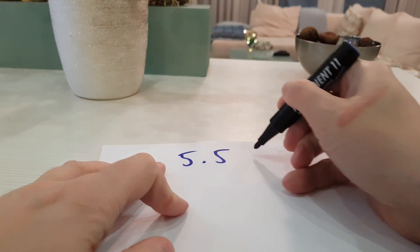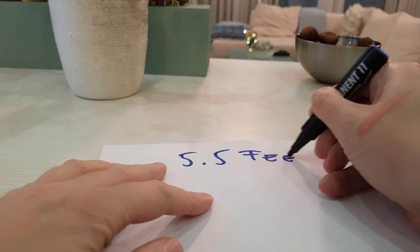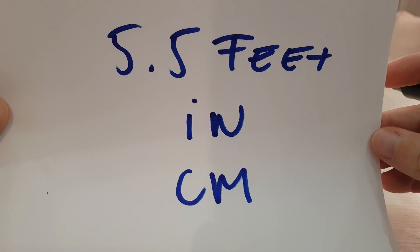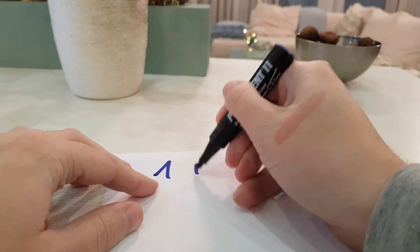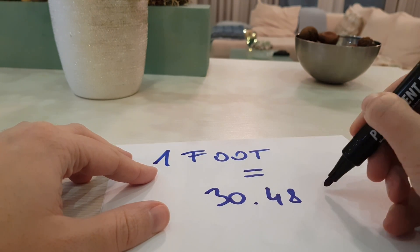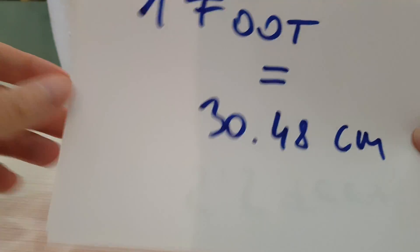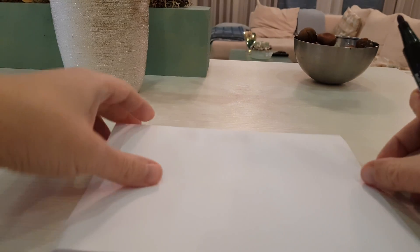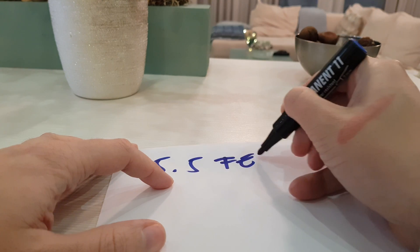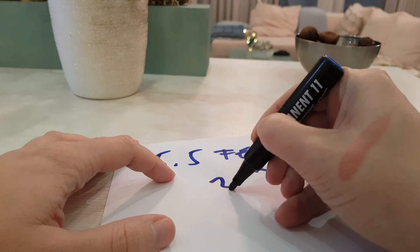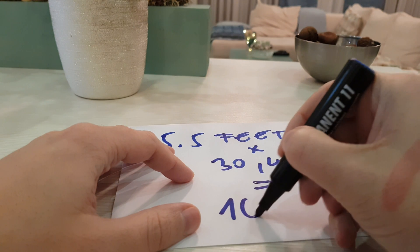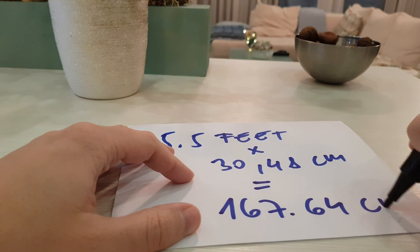In this video I will show you how to convert 5.5 feet to centimeter. Here is the formula: one foot equals 30.48 centimeter. We multiply 5.5 feet with 30.48 centimeter and the result is 167.64 centimeter.